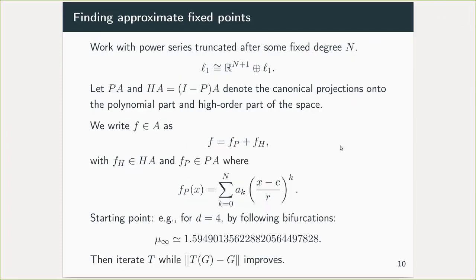So our first job then in finding a fixed point and proving rigorously the fixed point exists is to find an approximate fixed point. To do this, it's enough to simply truncate our space at some finite degree polynomials. I'm going to let P and H denote the projections onto the polynomial part and the high order part of the space respectively. So we can write any function in our space as the sum of a polynomial part and a high order part.